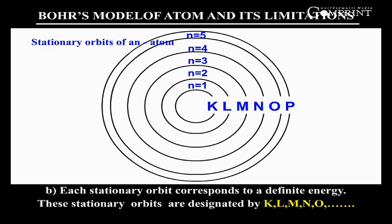Each stationary orbit corresponds to a definite energy. These stationary orbits are designated by K, L, M, N, O, and so on.